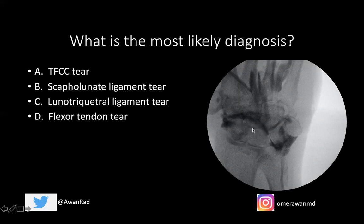The only way contrast can go from the proximal carpal row to the mid-carpal row is one of two ways: there has to be a hole or a perforation in either the scapholunate ligament or the lunotriquetral ligament, because that's the only way contrast can get from the proximal carpal row to the mid-carpal row. If there's a tear in one of these two ligaments — which are barriers between the proximal and mid-carpal rows — you will get contrast extravasation into the mid-carpal row.